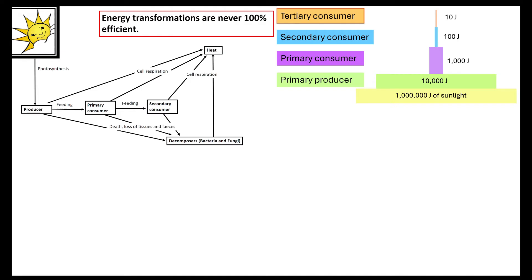Cellular respiration loses energy because it transfers light energy, which was converted into chemical energy, which is then released as thermal energy. Any producers or primary consumers losing material through leaf dropping, faeces, loss of tissue, or urine will have that material decomposed by bacteria and fungi, which also respire and release thermal energy. So energy transformations are never 100% efficient.